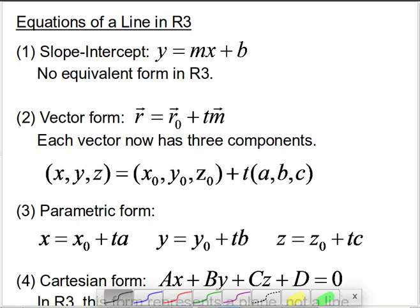So I would draw your attention first of all to the first one I have here, which is the equation for a line in R2, the form that we're most familiar with at this point, and that's the slope-intercept form, y equals mx plus b.